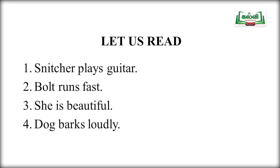Let us read these example sentences: Snitcher plays guitar. Bolt runs fast. She was beautiful. Dog barks loudly. Observe the structure — Stitcher (subject) plays (verb) guitar (object). Bolt (subject) runs (verb) fast (adjunct). She (subject) was (verb) beautiful (adjunct). Dog (subject) barks (verb) loudly (adjunct).